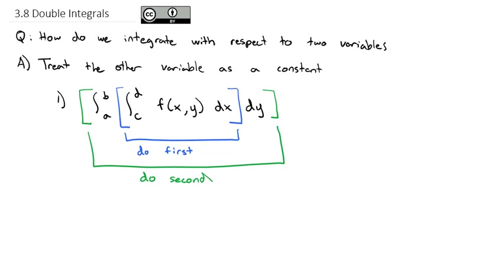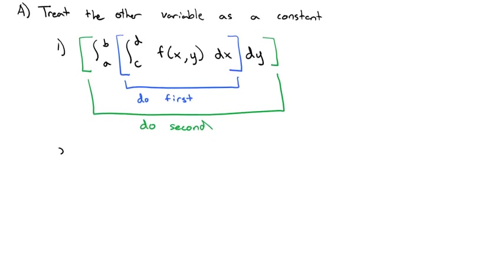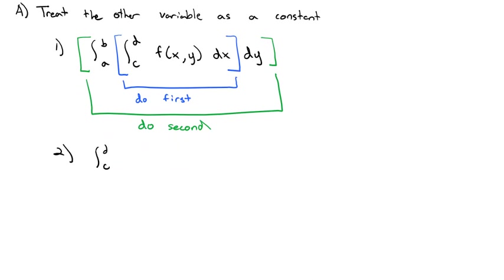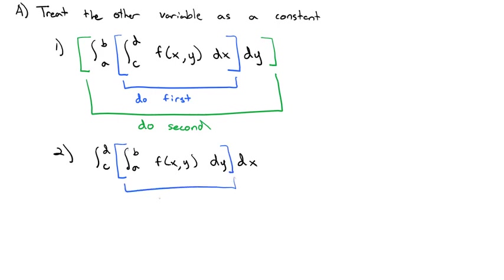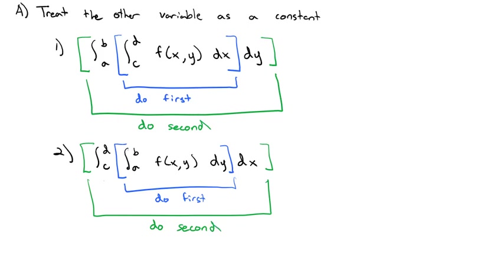There's no reason we have to do the dx first. We could also see the integral from c to d of the integral from a to b of f(x, y), doing the dy first and then the dx. Just as before, there's an implied parentheses around the inside, so we do that part first and the outside integral second. The order is determined by whether we see the dx first or the dy first.